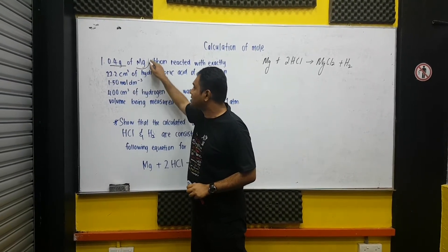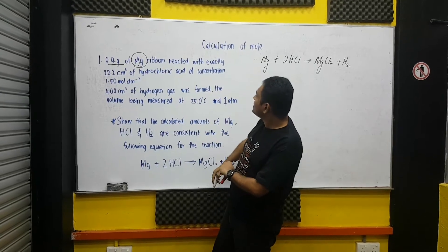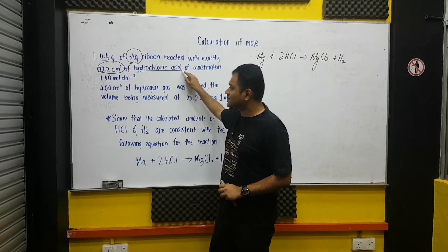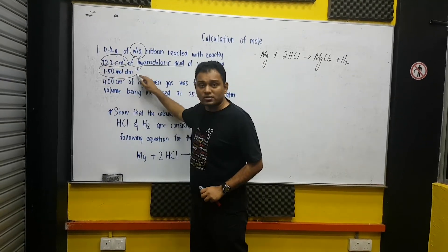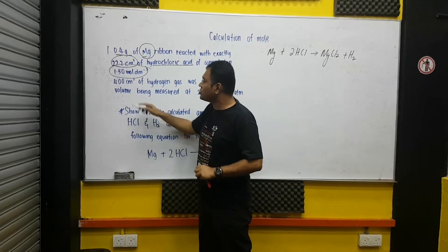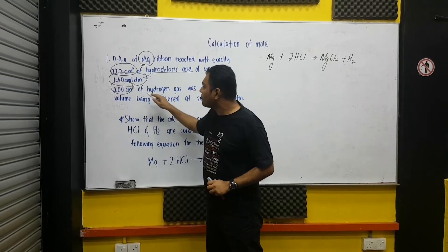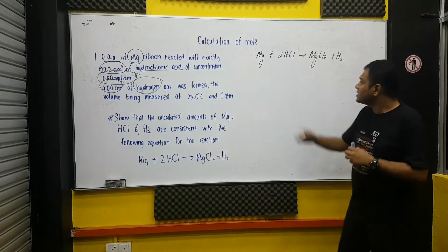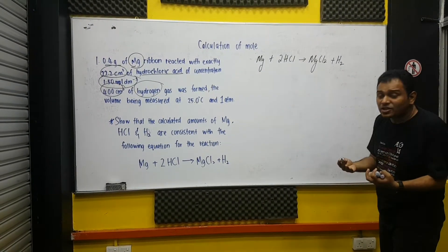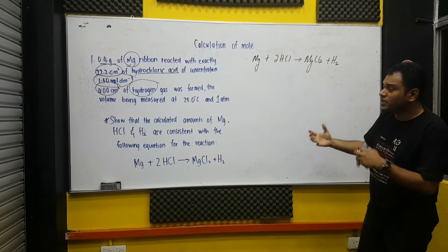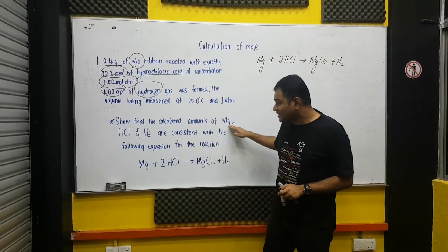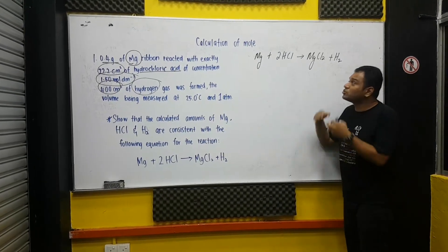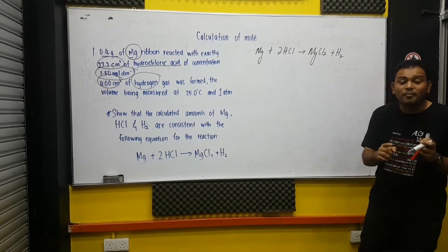As you can see, the information over here will be, of course, the mass of magnesium. And on the other side, we have the volume, volume of hydrochloric acid with the concentration. And the other information will be the volume of the gas, hydrogen gas produced through the experiment. As you can see, this is the information. I would like to, if you want to prove this, ask you to show that the calculated amounts of these things are consistent. I will advise you to do this in a table form. It will be better.